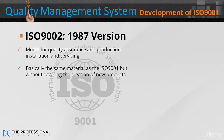The ISO 9002 1987, model for quality assurance in production, installation and servicing, had basically the same material as the ISO 9001, but without covering the creation of new products.